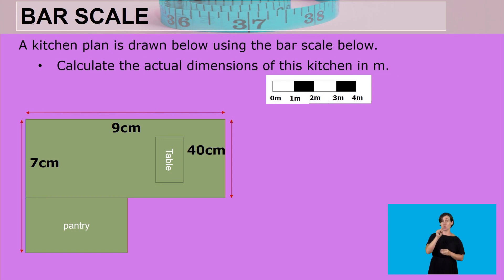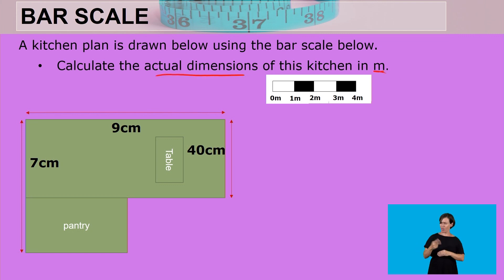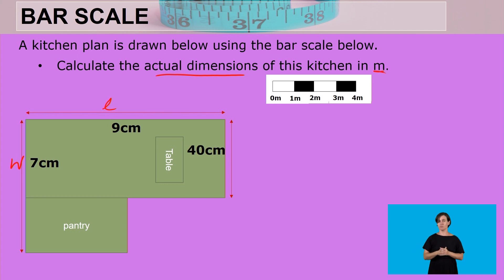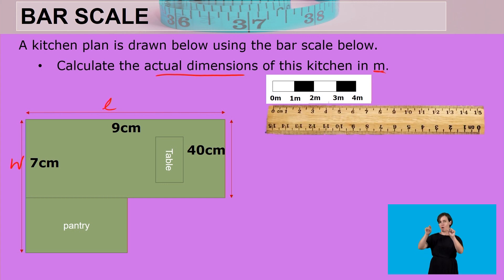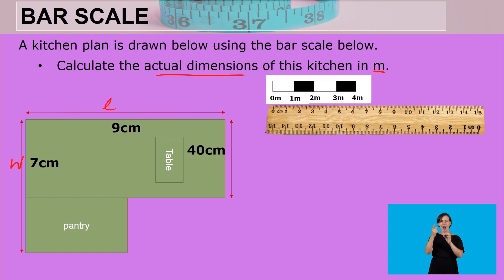A kitchen plan is drawn below using the bar scale. Calculate the actual dimensions of this kitchen in meters — that means the actual length and actual width. Given the bar scale, what is key is to always write down the measured units that you have measured on your own.